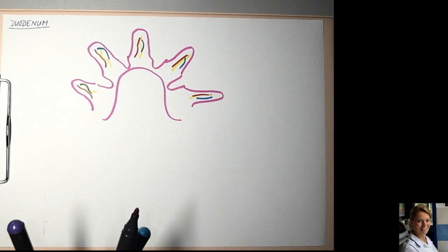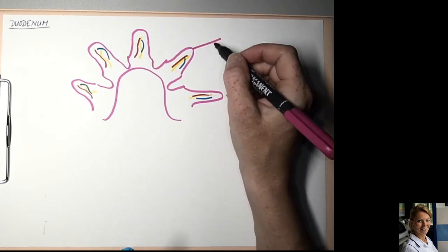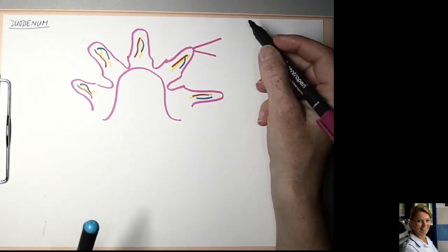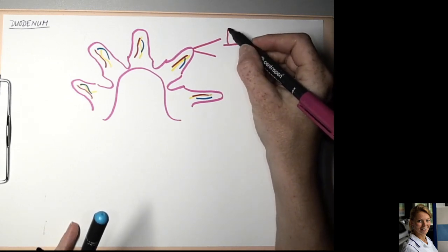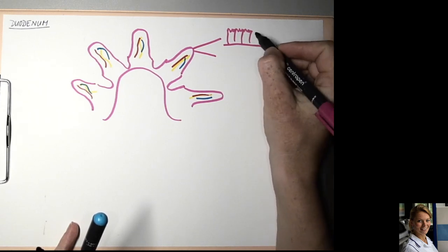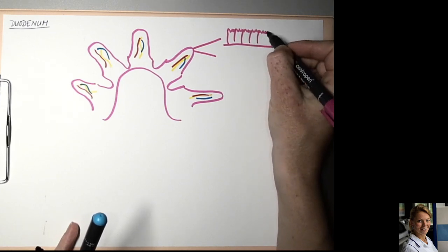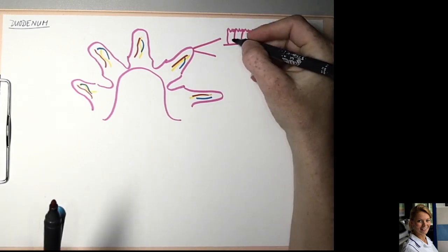The surface of villi and intestinal glands are aligned by simple columnar epithelium. These cells are called enterocytes.